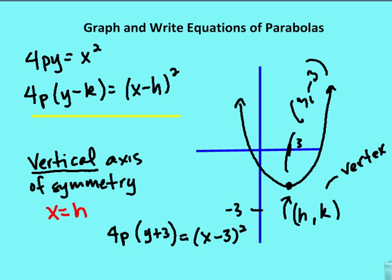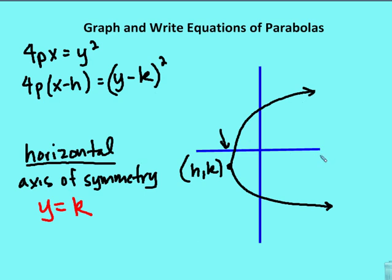When the orientation of the parabola is right or left, the axis of symmetry is horizontal. In this case, the axis of symmetry is y equals k, which makes sense because the axis of symmetry goes right through the vertex at (h, k), creating a line where y equals some constant value irrespective of x.